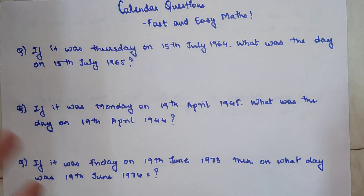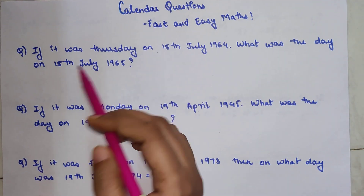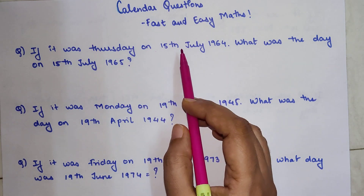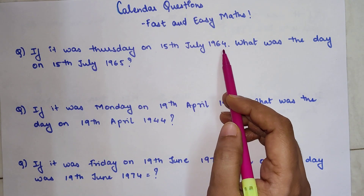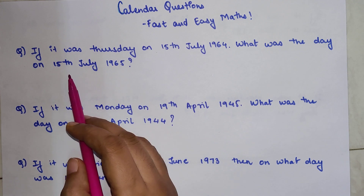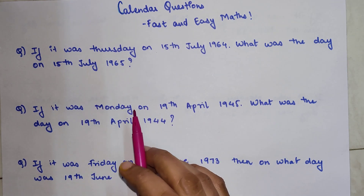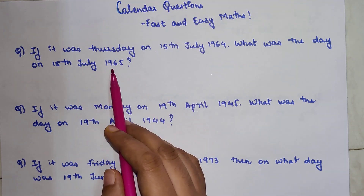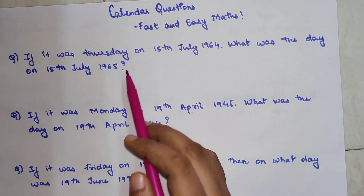The first question is: if it was Thursday on 15th July 1964, what was the day on 15th July 1965? Now please understand — the date and the month are the same; only the year has changed.